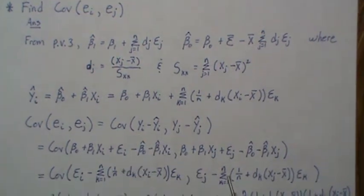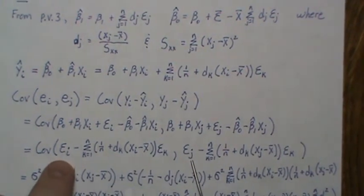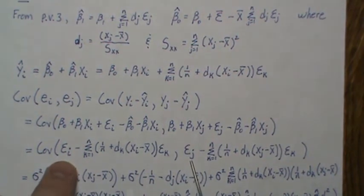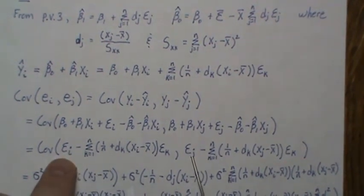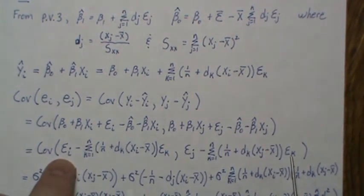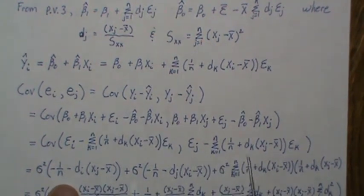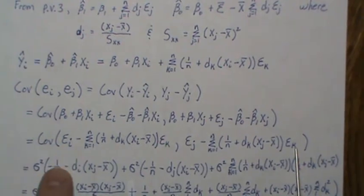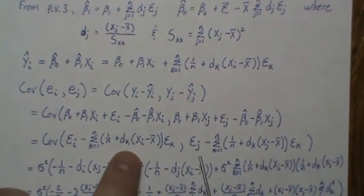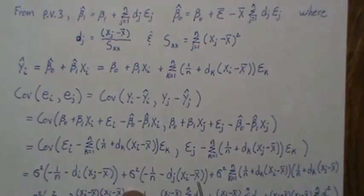When we take the covariance between any two epsilons from different observations it's zero. For εᵢ and the sum, whenever the index is not i it's zero — only the i-th term is nonzero, and the covariance of εᵢ with itself is σ². So σ² comes out front and the sum collapses to one term. Similarly for εⱼ.